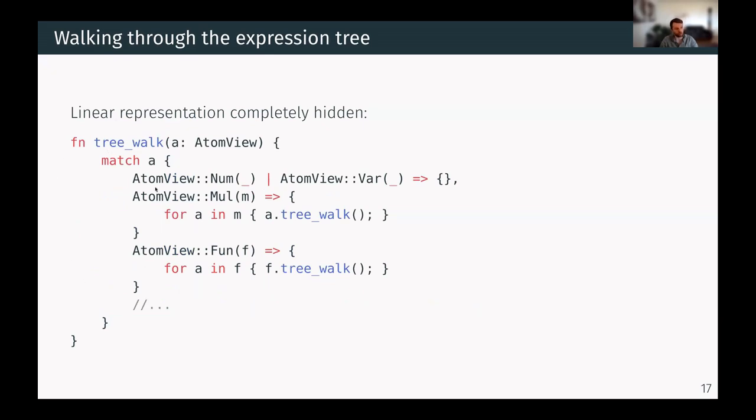So by using these abstractions, we can completely hide that we have a linear representation. Here there's a recursive function that walks through the tree. When the atom is a multiplication, it goes through all the arguments of the multiplication. And it's completely hidden that the underlying representation is linear.